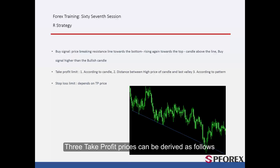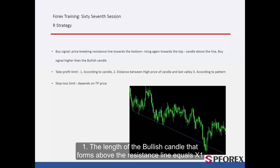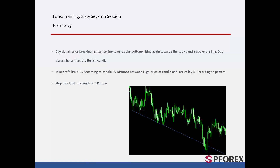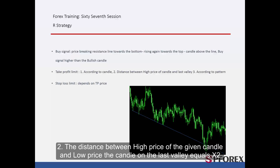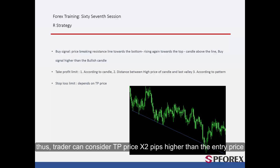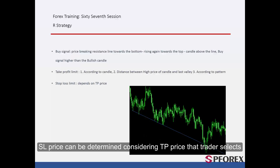Three take profit prices can be derived as follows. 1. The length of the bullish candle that forms above the resistance line equals x1; the first TP price can be x1 pips higher than the entry price. 2. The distance between the high price of the given candle and the low price of the candle on the last valley equals x2; TP can be x2 pips higher than the entry price. 3. If a powerful pattern forms in this region, a trader can consider the third TP price via this pattern. SL price can be determined considering the TP price that the trader selects.